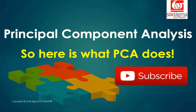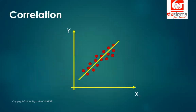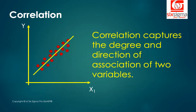Before we move any further, let's get started. Before we get into principal component analysis, we'll have to get our intuition right for correlations. A correlation captures the degree and direction of association between two variables.